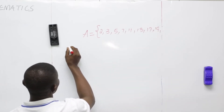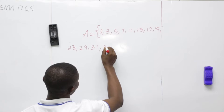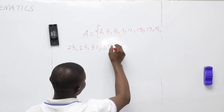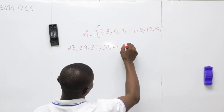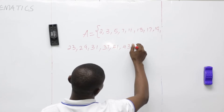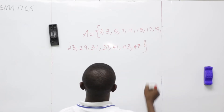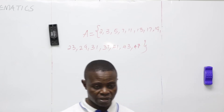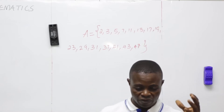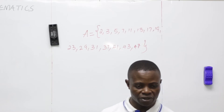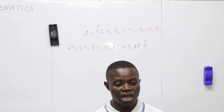Continuing: 19, 23, 29, 31, 37. Note: 39 is not a prime number. Then 41, 43. 45 is not a prime number. 47. 49 is not a prime number. These are the elements of set A: 2, 3, 5, 7, 11, 17, 19, 23, 29, 31, 37, 41, 47. They are all the elements or members of this set called A.